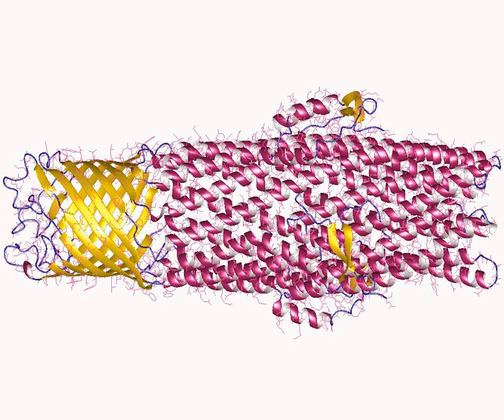the resistance nodulation cell division superfamilies (RND), and the multi-antimicrobial extrusion protein family (MATE). Of these, only the ABC superfamilies are primary transporters, the rest being secondary transporters utilizing proton or sodium gradient as a source of energy.